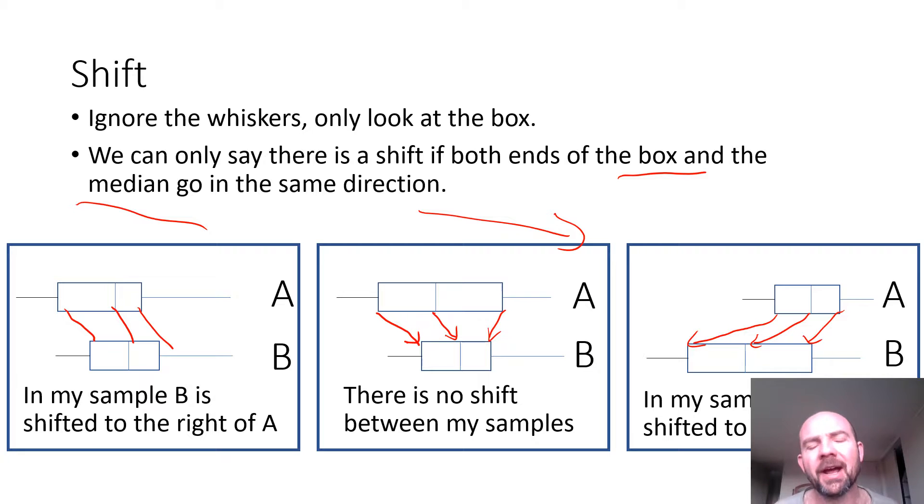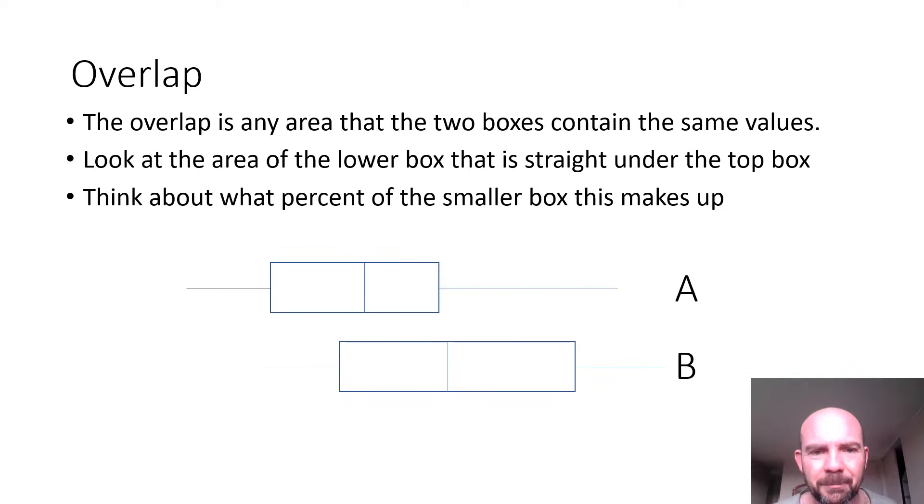Obviously, we could also talk about A being shifted to the right of B, that's fine, it's just two ways of saying the same thing. So now we'll move on to the idea of overlap. Overlap is any area that the two boxes contain the same values. So you look at the lower box and see where it is straight under the top box.